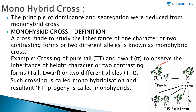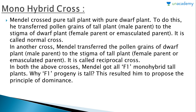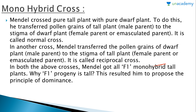In the diagrammatic representation of the cross, the pure parents — the pure tall plant and pure dwarf plant — are crossed, and the F1 progeny were all tall. Mendel crossed the pure tall plant with the pure dwarf plant by transferring pollen grains of the tall plant (male parent) to the stigma of the dwarf plant (female/emasculated parent) — this is called the normal cross. In the reciprocal cross, pollen grains of the dwarf plant were transferred to the stigma of the tall plant.